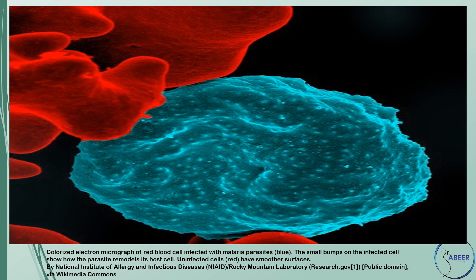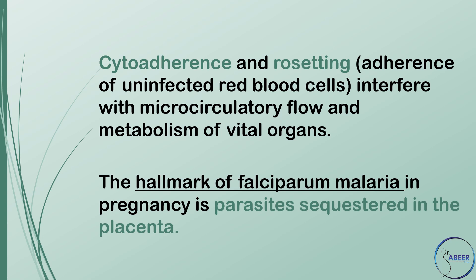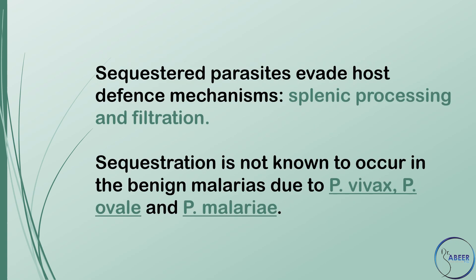Parasitic invasion of the erythrocyte consumes hemoglobin and alters the red cell membrane. This allows Plasmodium falciparum-infected erythrocytes to cyto-adhere, or stick, inside the small blood vessels of the brain, kidneys, and other affected organs. Cyto-adherence and rosetting — adherence of uninfected red blood cells — interfere with microcirculatory flow and metabolism of vital organs. The hallmark of falciparum malaria in pregnancy is parasites sequestered in the placenta. Sequestered parasites evade host defense mechanisms, splenic processing, and filtration.